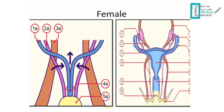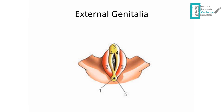One important note: some books say the Wolffian/mesonephric duct gives us kidney-related structures — the ureters, renal pelvis, calyces, and collecting tubules — in both males and females. This seems confusing since we said the Wolffian duct dies in females. What actually happens is that before the Wolffian duct regresses in females, it sprouts a small tissue called the ureteric bud, which grows into the ureter, renal pelvis, calyces, and collecting tubules.